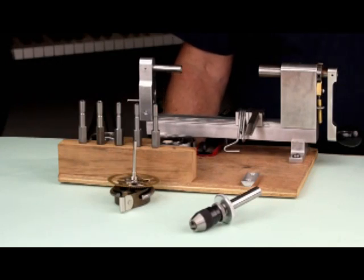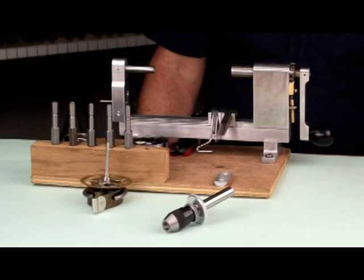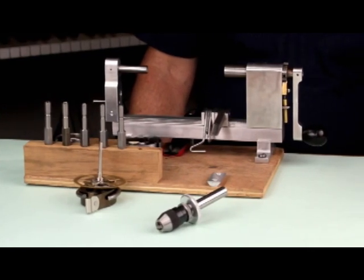Last but not least, we'll remove the mainspring from the winding arbor. To do this, we will use a commercial Ollie Baker style spring winder, which I will demonstrate.